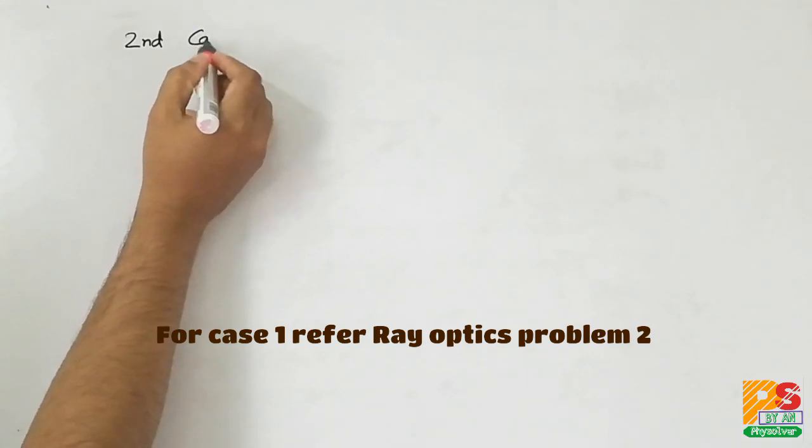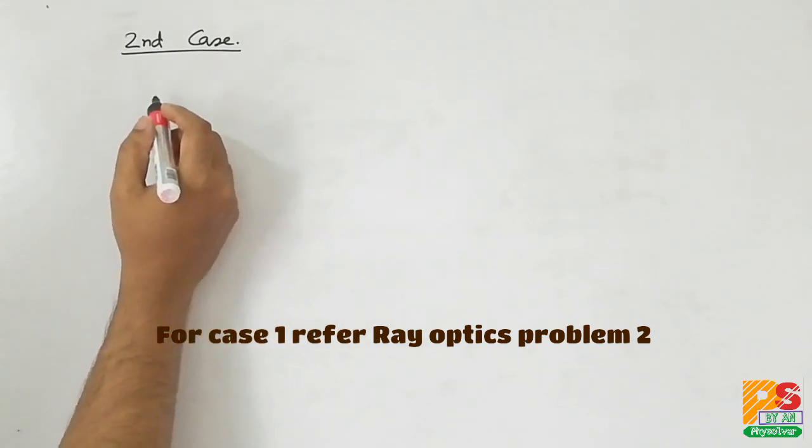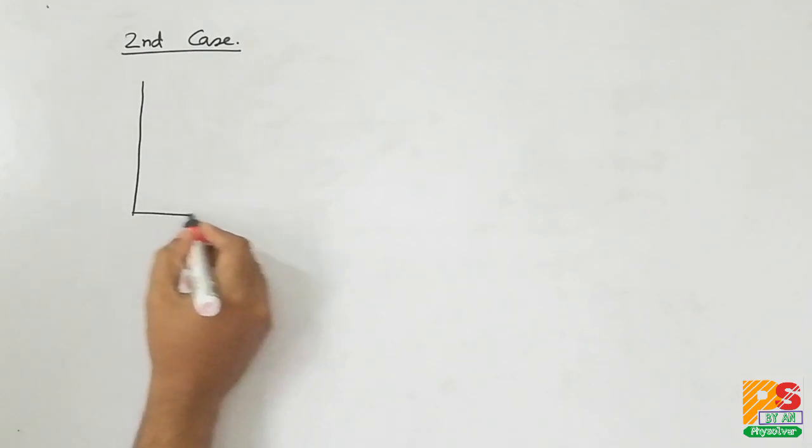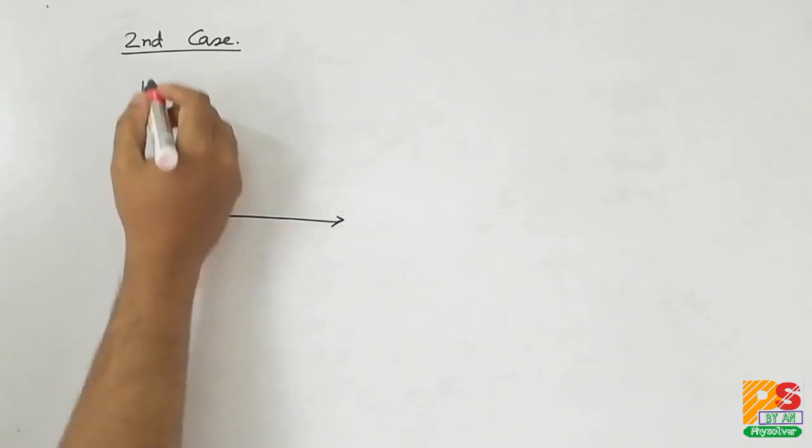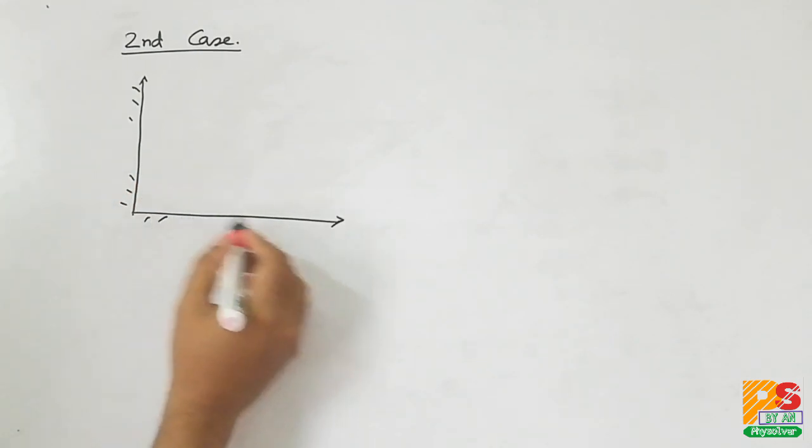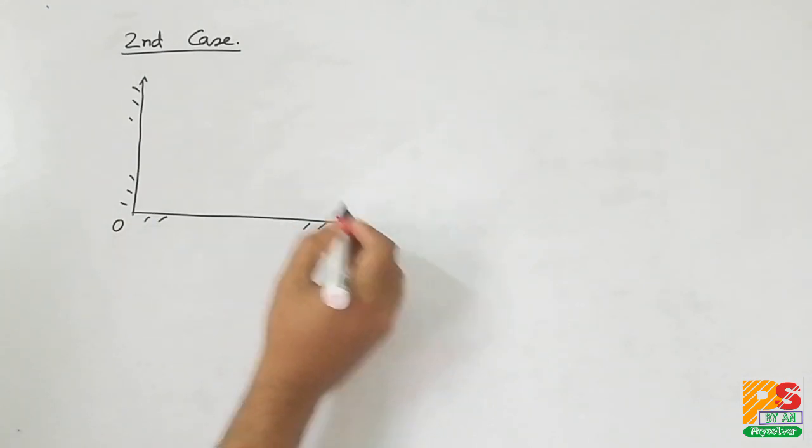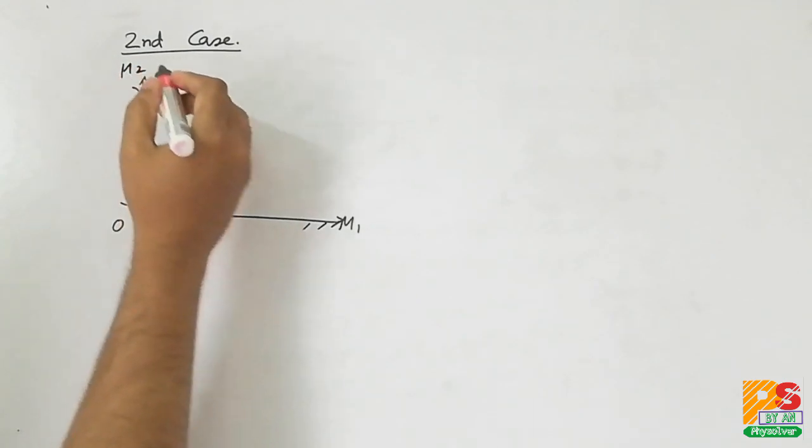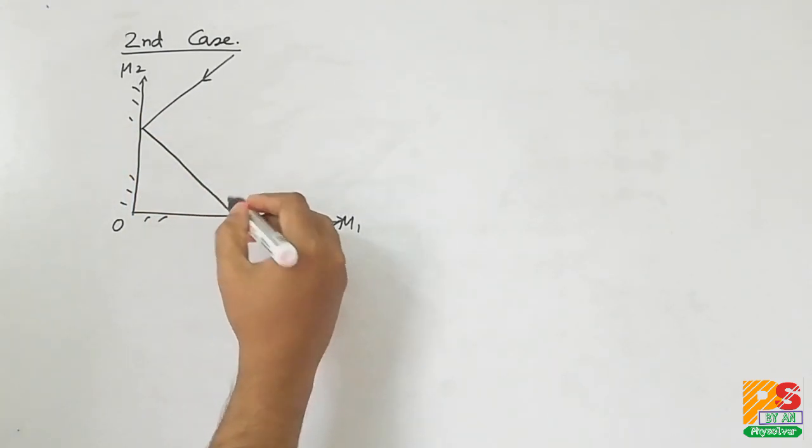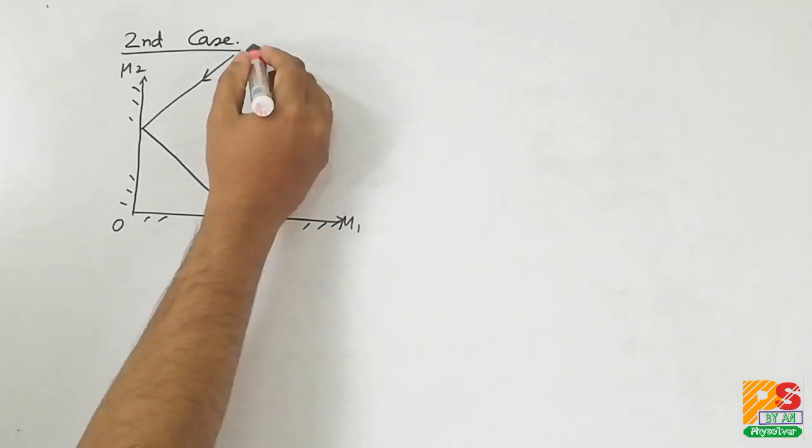Hello students. In this question, two plane mirrors are inclined at an angle theta. Let's name the mirrors OM1 and OM2, and it is given that the emergent ray is parallel to the incident ray.